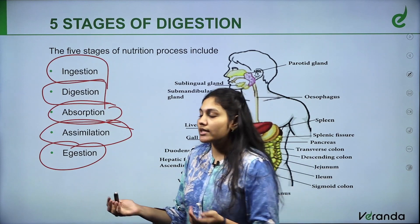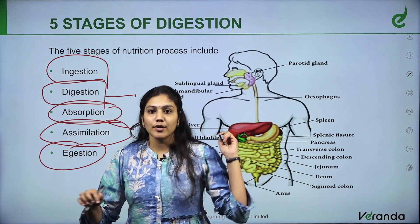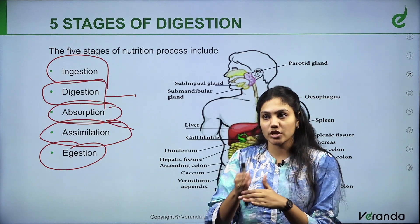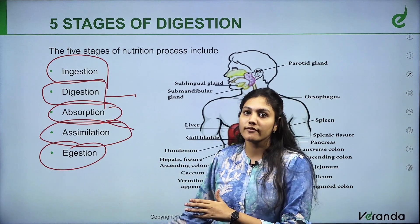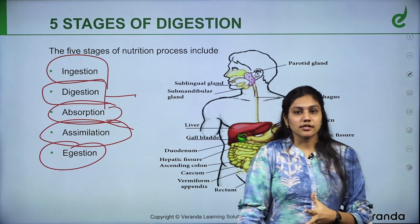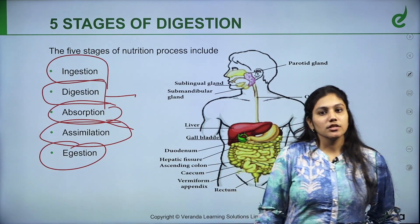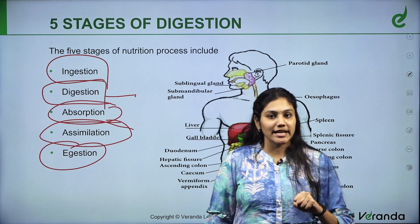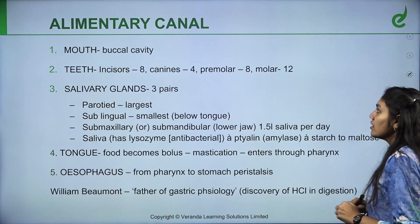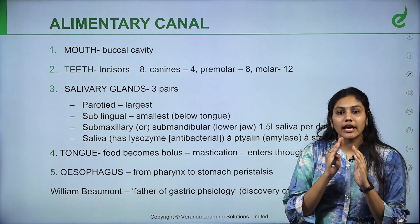So, the digestive system. Digestion is the main phase because that is the complex molecule — it is going to chip it down, it is going to break it down. The digestive system involves: Ingestion, Digestion, Absorption, Assimilation, and Egestion.